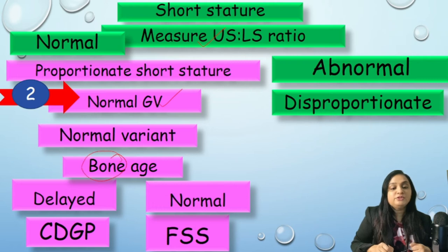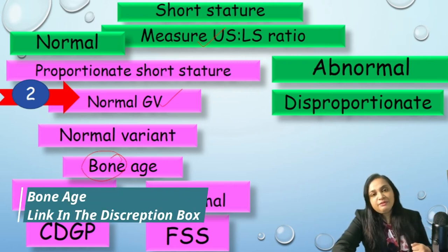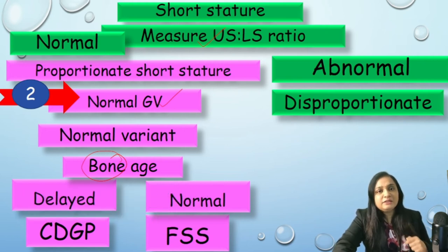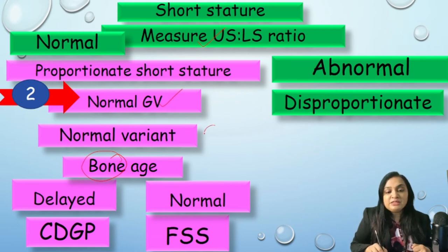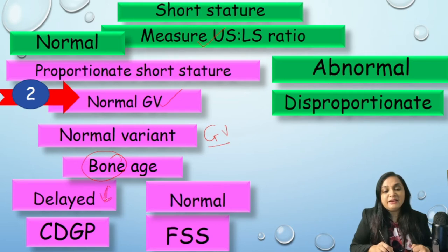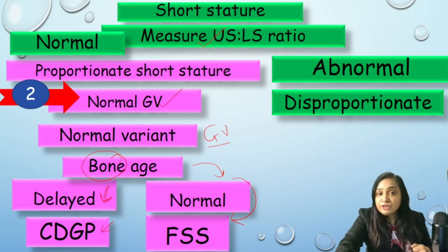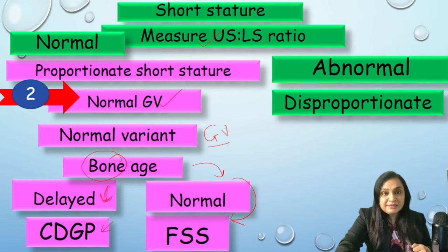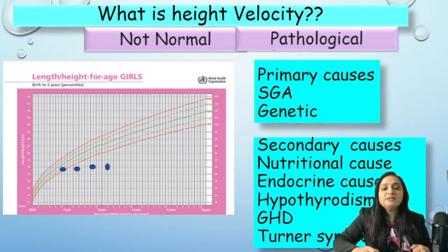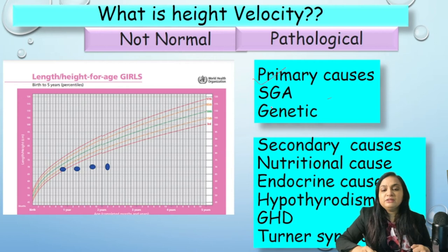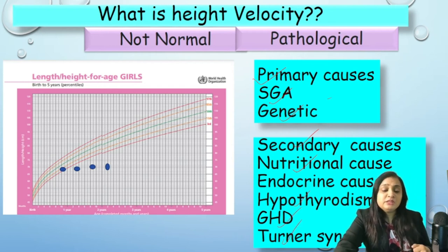The third step is bone age estimation, which has been discussed in the previous series — the link is in the description box. If growth velocity is normal and bone age is delayed (less than the chronological age), then it is constitutional delay in growth and puberty. If bone age is also normal, we are dealing with familial short stature. Conditions with abnormal growth velocity include all pathological causes: SGA, genetic, secondary causes, endocrine, nutritional, hypothyroidism, and growth hormone deficiency.